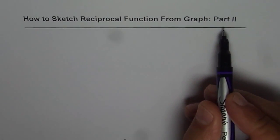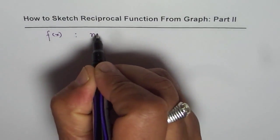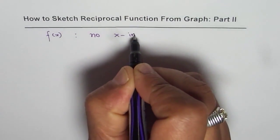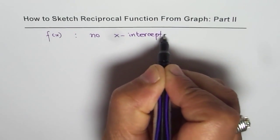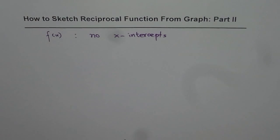I am Anil Kumar and now let us understand how to sketch a reciprocal function from its graph when there are no x-intercepts for the function. In part 2 we are discussing the case when we have a function f of x with no x-intercepts. In part 1 we considered functions with x-intercepts, both linear and quadratic types. Now let us consider a case where we have a function without any x-intercepts.